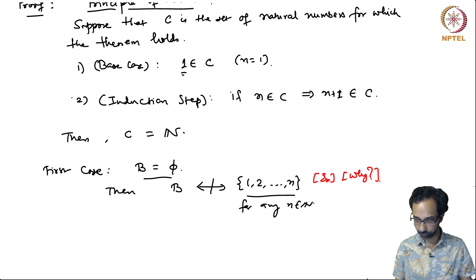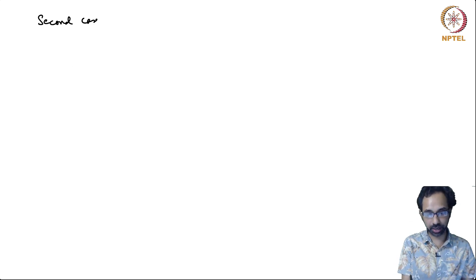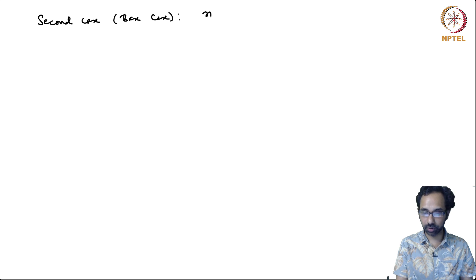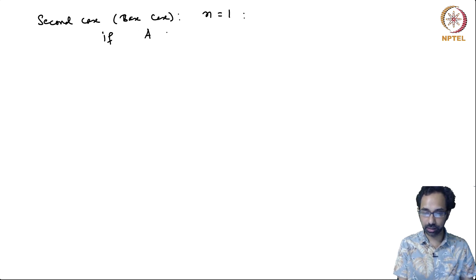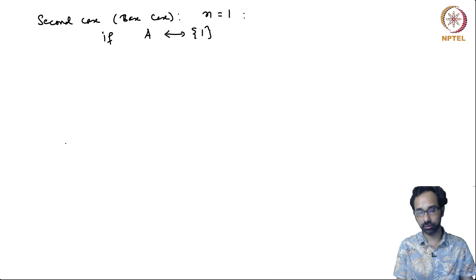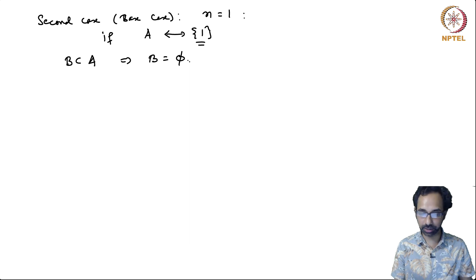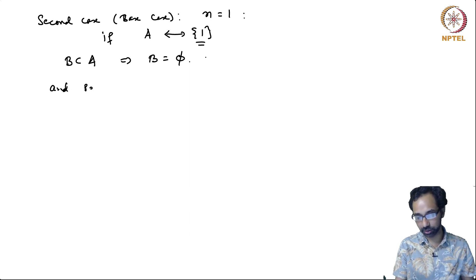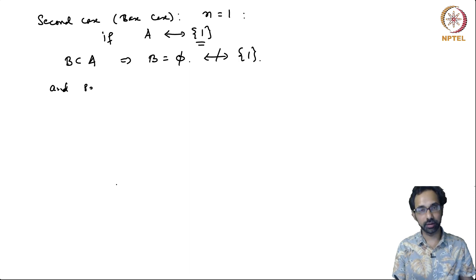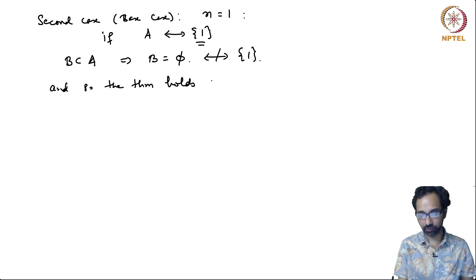Now the second case, and this is our actual base case for the induction: the theorem holds for N equal to 1. If A is in bijective correspondence with {1}, then any proper subset of this set with one element must be empty. The only proper subset of a set with one element is the empty set, and so the theorem holds. The empty set is not in bijective correspondence with {1}. So the theorem holds for N equal to 1.